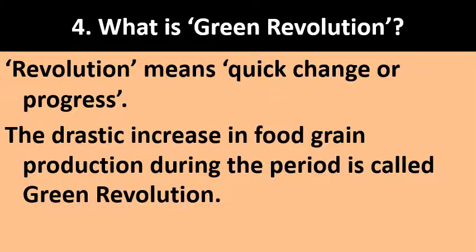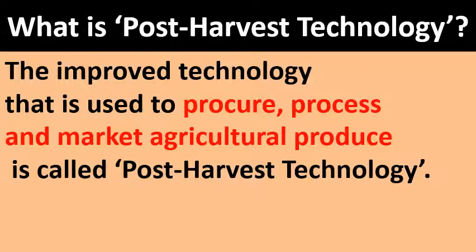What is the Green Revolution? Green Revolution means quick change or progress. More specifically, the drastic increase in food grain production during a particular period is called the Green Revolution. What is post-harvest technology? The improved technology that is used to procure crops, process them, and market agricultural produce is called post-harvest technology.